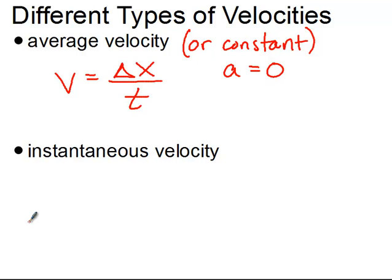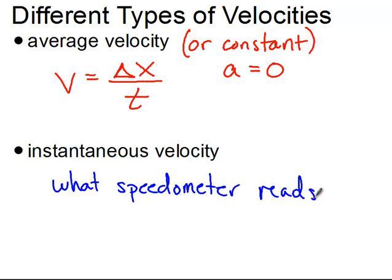An instantaneous velocity is one that is found by looking at a speedometer. This is what the speedometer says. When you're going down the road and look at the speed limit, that's not your average speed limit, that's your instantaneous speed limit. When the police officer puts that radar gun on your car, he's looking for the instantaneous speed, not the average speed.